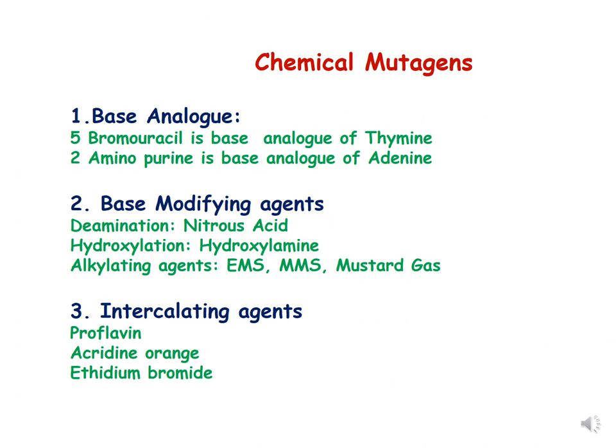Chemical mutagens are of three kinds. The first is called base analogs, because the structure of the chemical is similar to a base. We will discuss two base analogues in this lecture: 5-bromouracil, which is a base analog of thymine, and 2-aminopurine, which is a base analog of adenine.